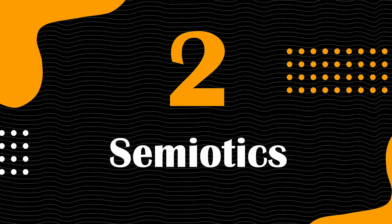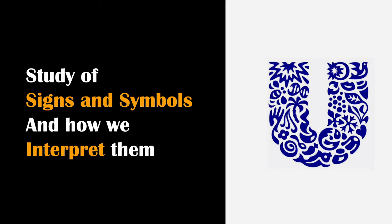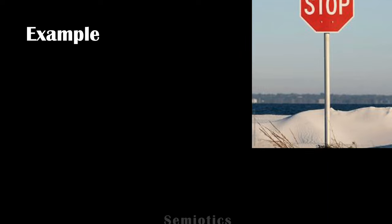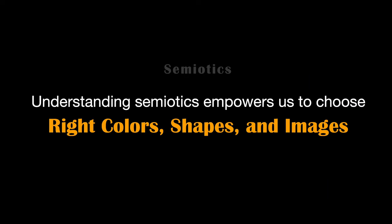Our next term is Semiotics. Semiotics is the study of signs and symbols and how we interpret them — the secret language of design. It's all about understanding the meanings behind visual elements. Consider a red stop sign: it's not just a red octagon, it's a symbol that instantly communicates 'stop' without words. Understanding Semiotics empowers us to choose the right colors, shapes and images to evoke the desired response from viewers.